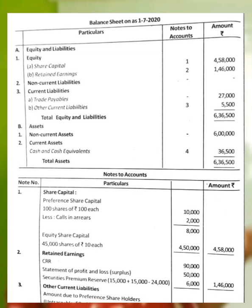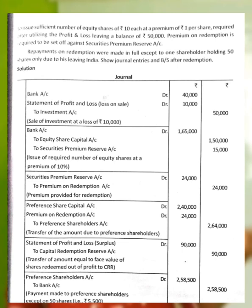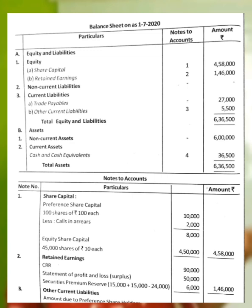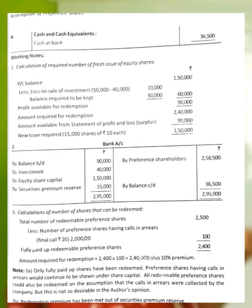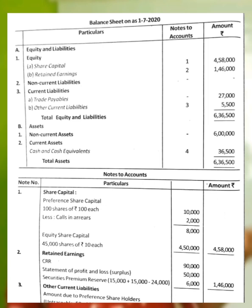Untraceable Preference Shareholders: 50 shares at Rs.100 plus 10% premium = Rs.5,500, shown under other current liabilities. Non-current assets: Rs.6,00,000 (as given). Current assets — cash and cash equivalents: bank account balance Rs.36,500. Total equity and liabilities = Rs.6,36,500. Total assets = Rs.6,36,500. The balance sheet has been tallied.